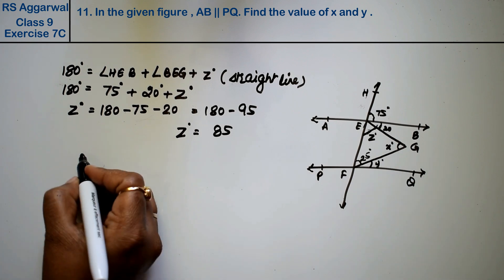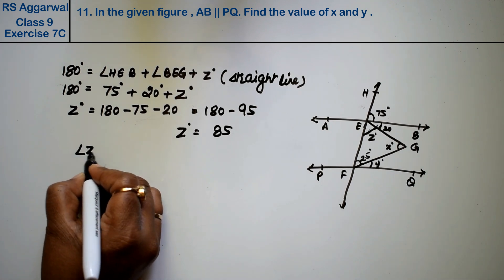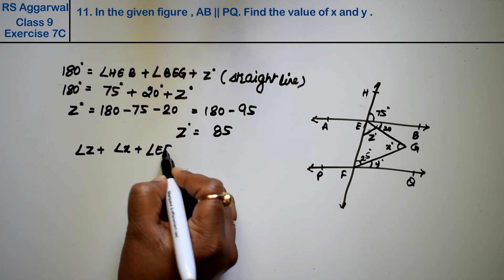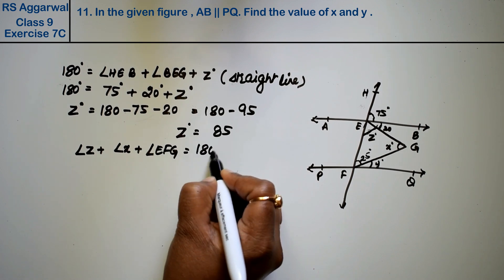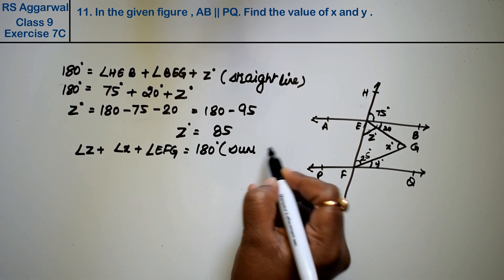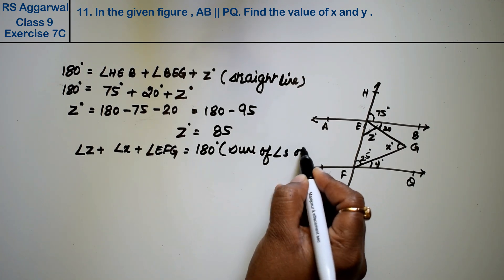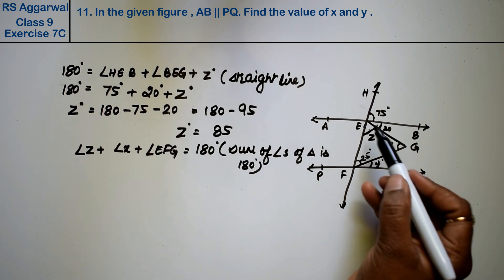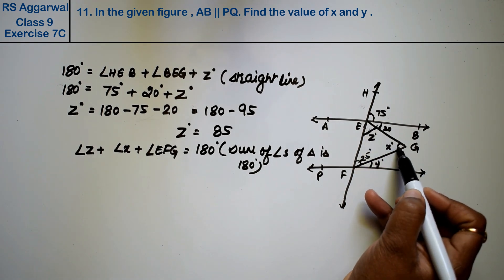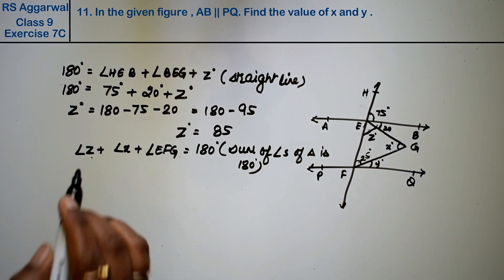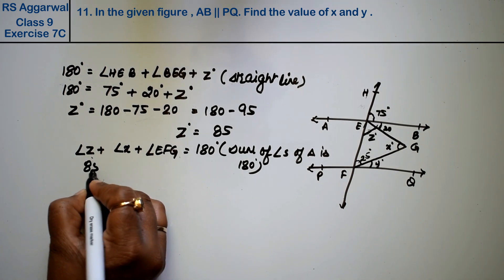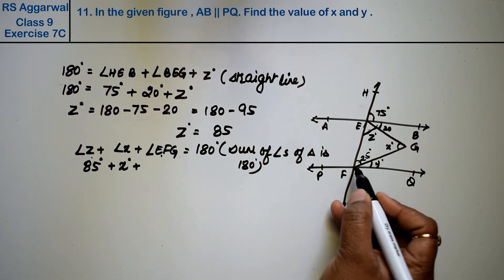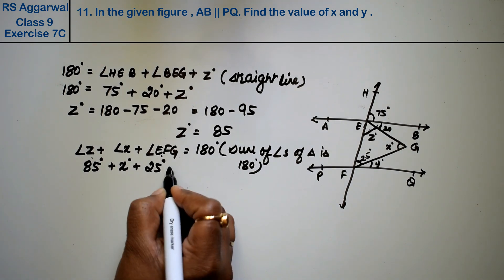Now, using the triangle angle sum: angle Z plus angle X plus angle EFG equals 180 degrees. Why? Because the sum of angles of a triangle is 180 degrees. These three angles form a triangle, so their sum is 180. Z came out to be 85 degrees. X is unknown. And angle EFG is 25 degrees. So: 85 plus X plus 25 equals 180.